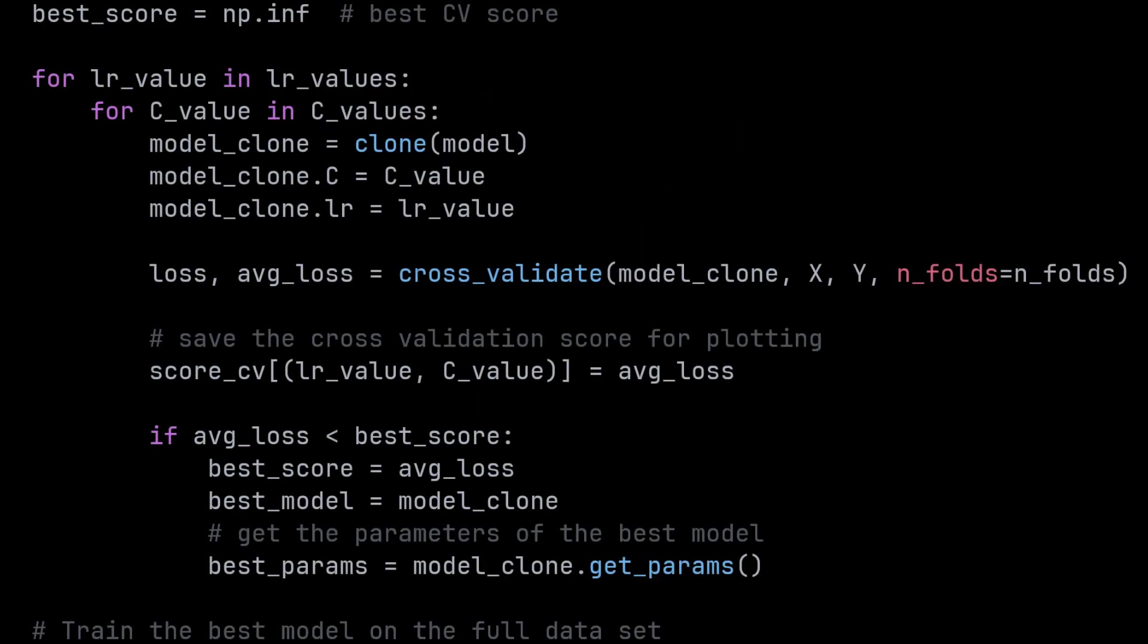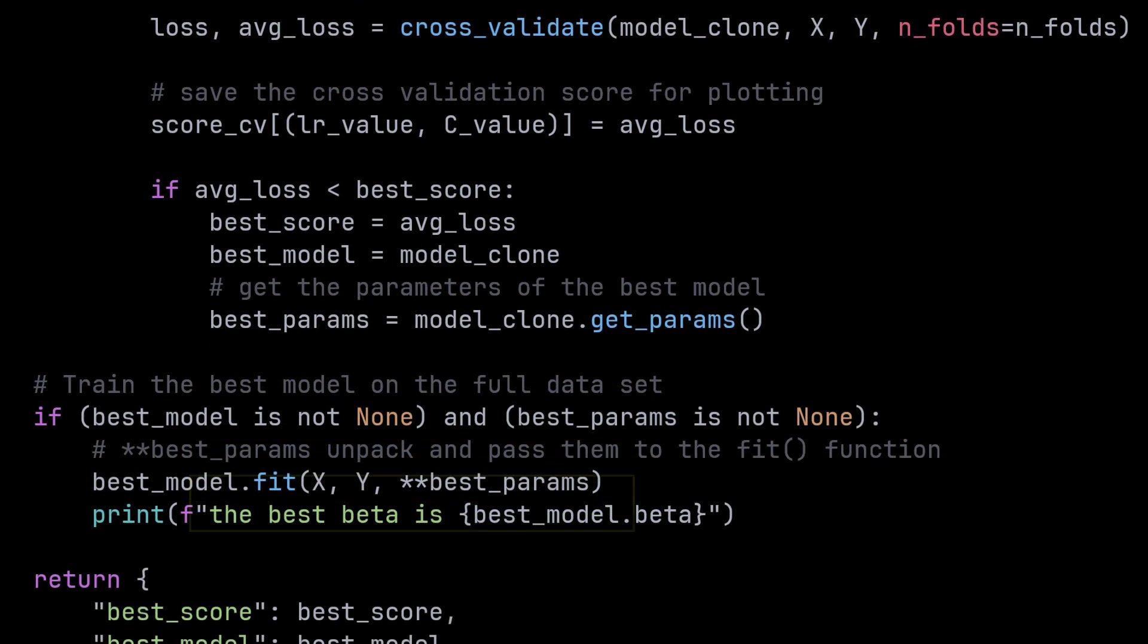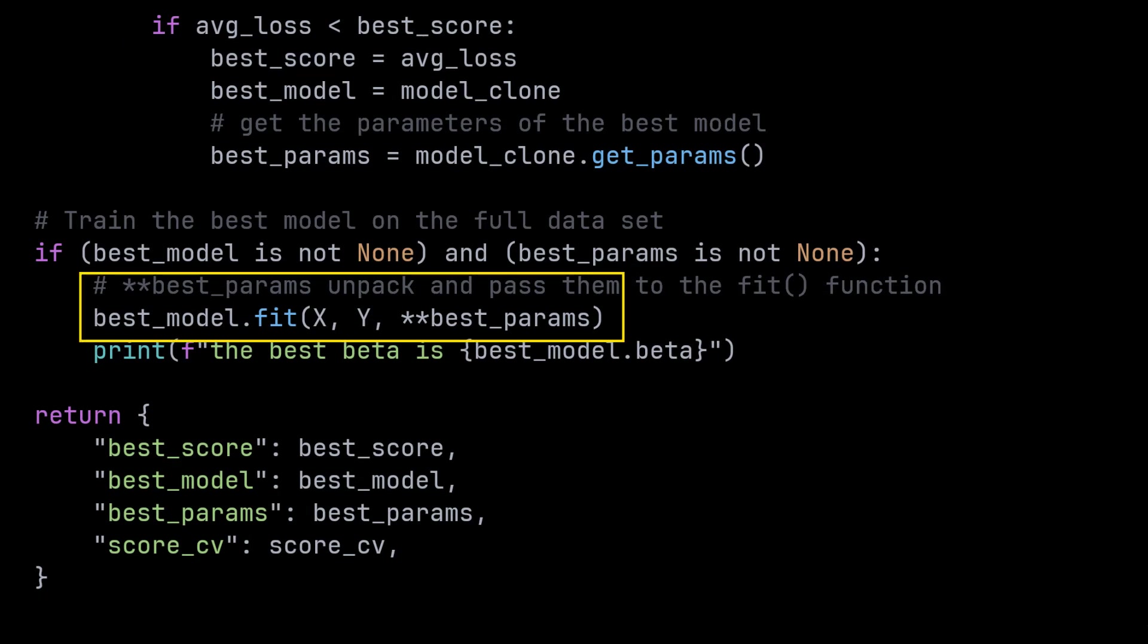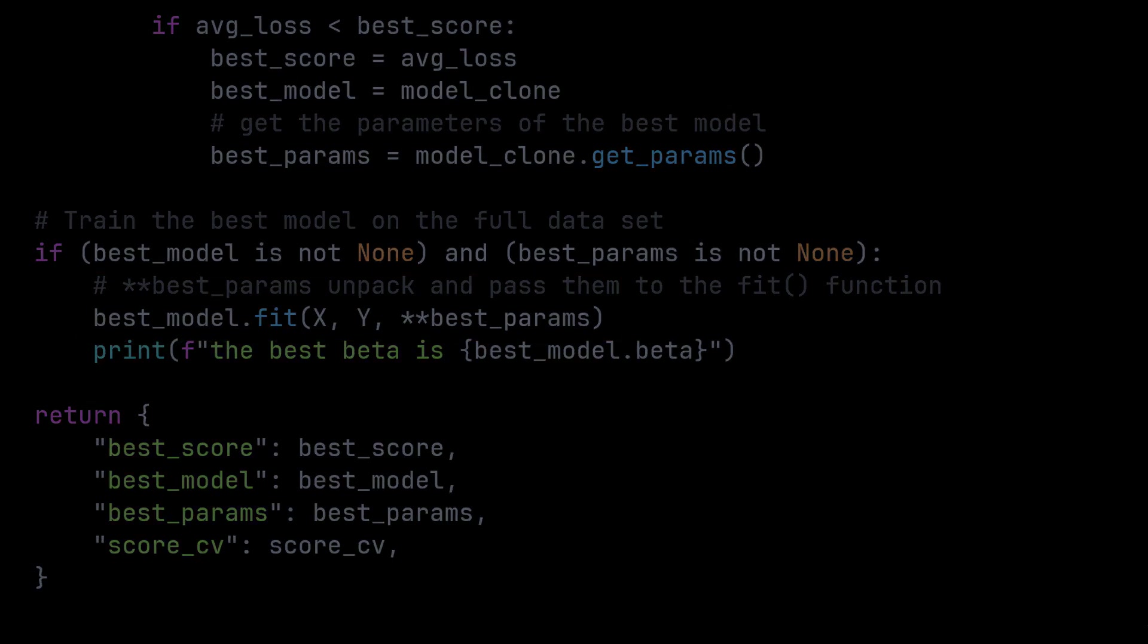And compute the average loss of each model. If the loss is better than the best one we already have, we assign it as the best current model. After we ran all over the combinations, we fit the best model using the best combination of learning rate and penalty parameters.